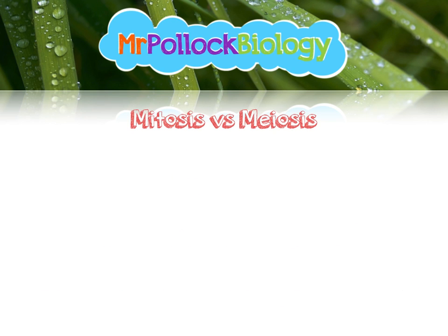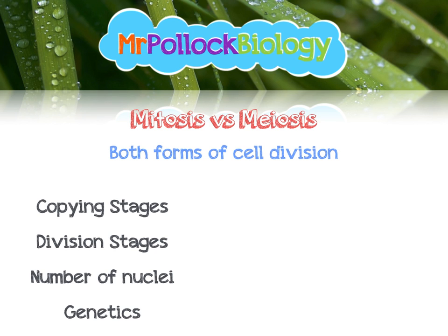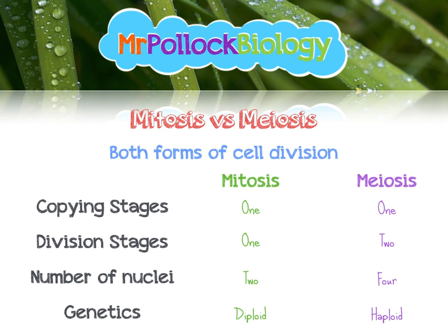In my meiosis video, I compared meiosis with mitosis. Both of these are forms of cell division, and I like to compare them in terms of copying stages, division stages, how many nuclei we get at the end, and the genetics of those nuclei. Mitosis has one copying stage, one division stage, two nuclei produced, and they're diploid — meaning they've got the full complement, the full chromosome number — and they're genetically identical to the cells they came from. In meiosis, however, there is only one copying stage just the same, but two division stages, four nuclei produced, and they are haploid — the gametes that are produced. So that's the comparison, but now we should just focus on mitosis.